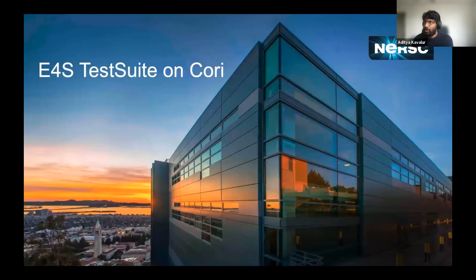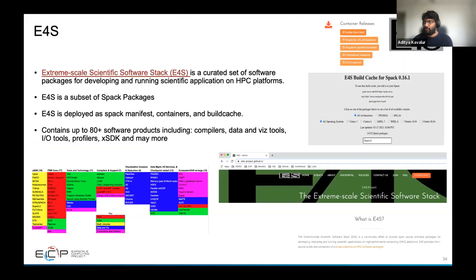For software stack testing, we have E4S testing on Cori. E4S — Extreme-scale Scientific Software Stack — is a curated set of software packages, a subset of Spack packages, distributed as Spack manifests, containers, and build caches. It includes compilers, data and visualization tools, profilers, xSDK, and more.